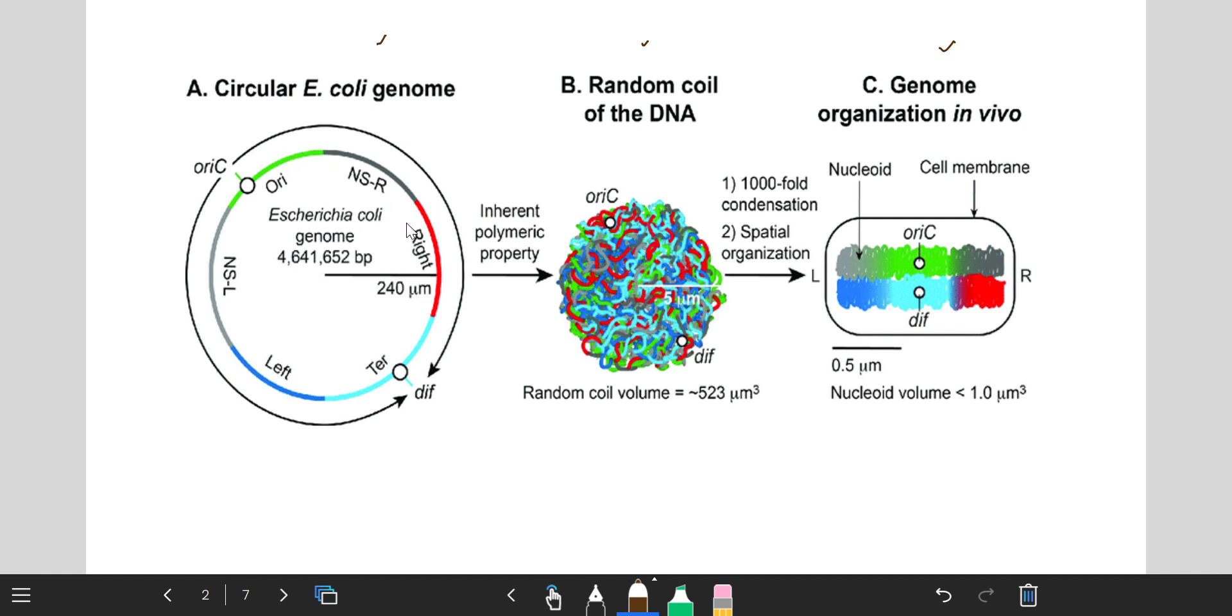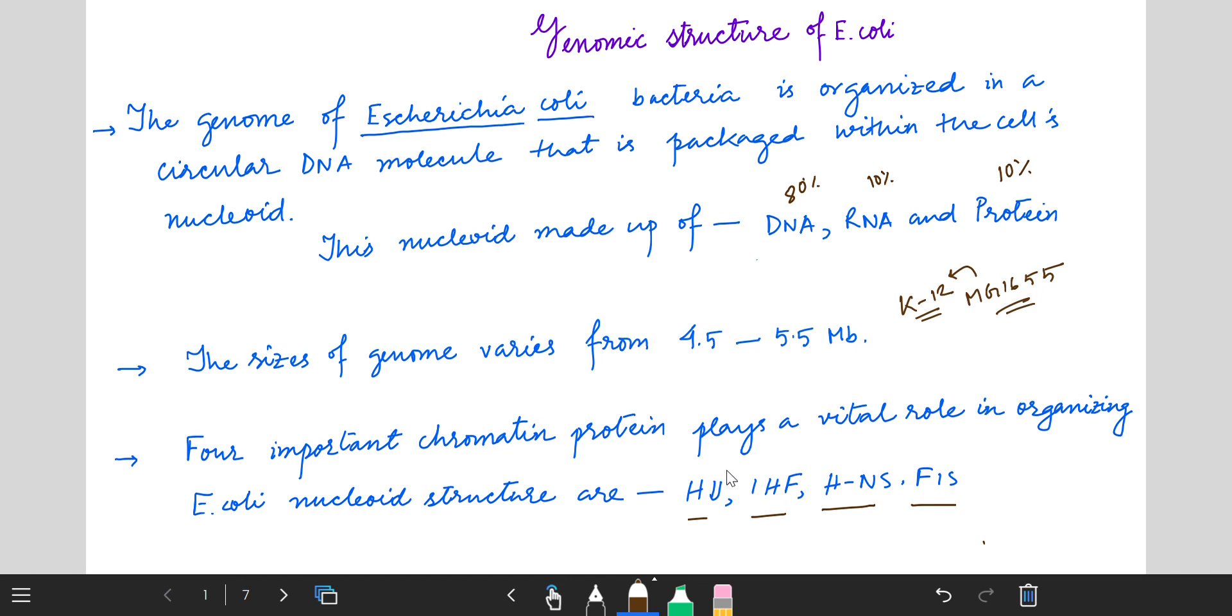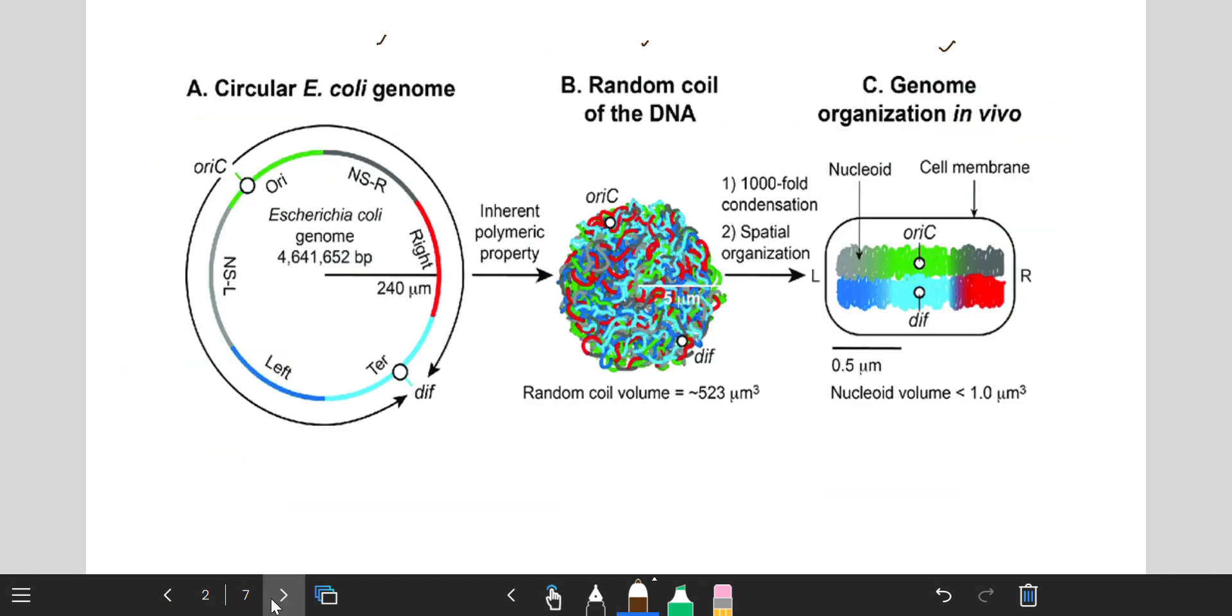The green, red, blue, and sky colors represent these proteins: HU, IHF, HNS, and FIS proteins. After supercoiling, the structure looks like this, and after incorporation into the cell, the picture is like this. This is a daughter E. coli cell.